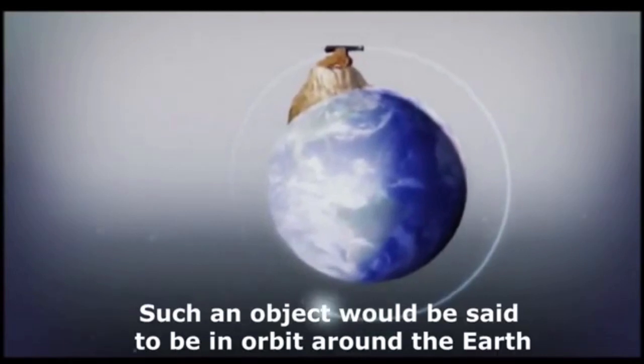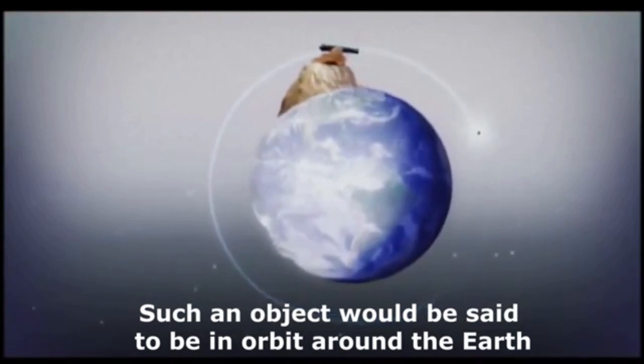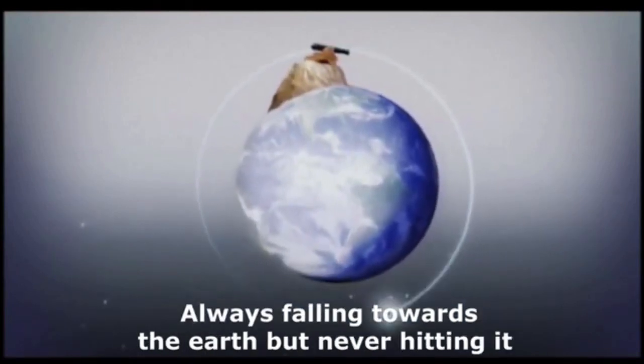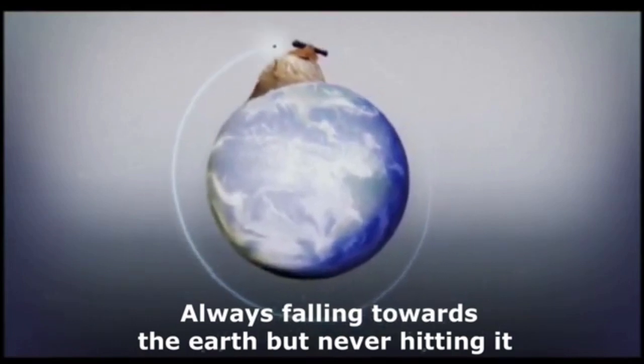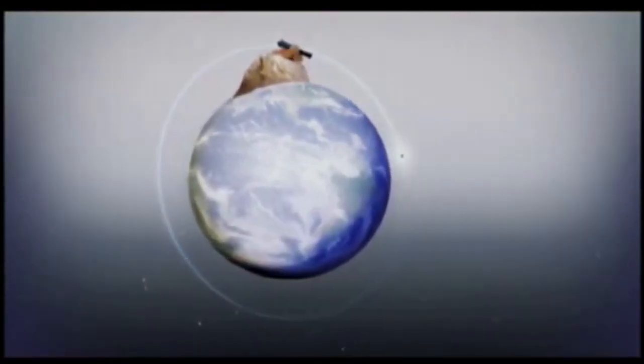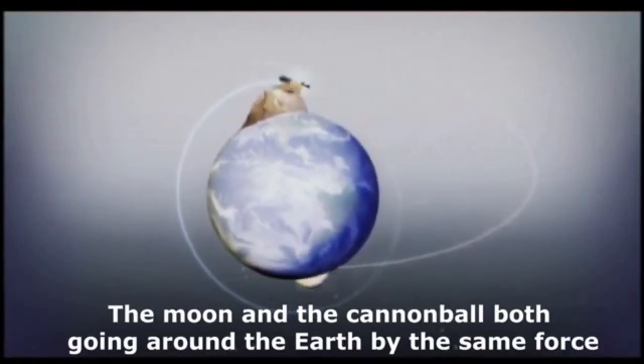Such an object would be said to be in orbit around the earth, always falling towards the earth but never hitting it. The moon and the cannonball both go around the earth by the same force.